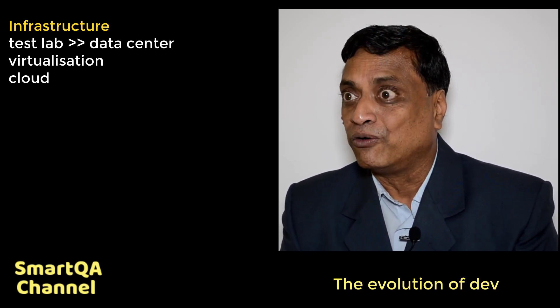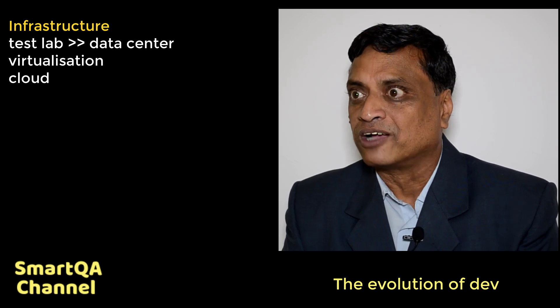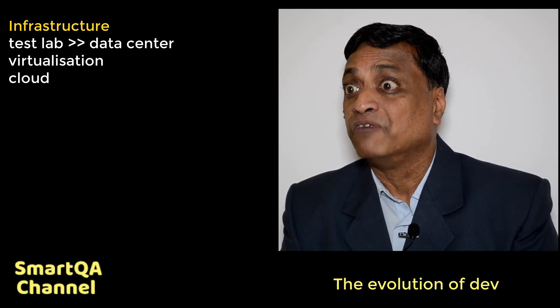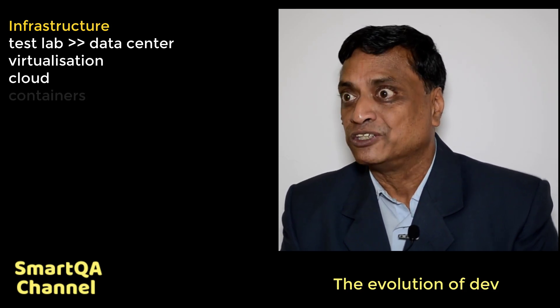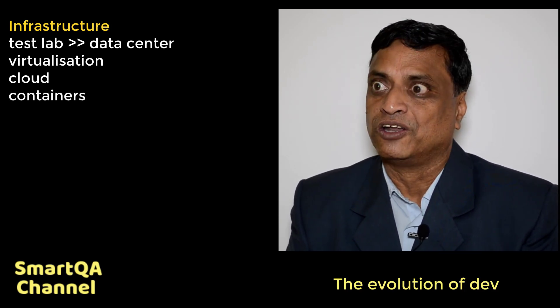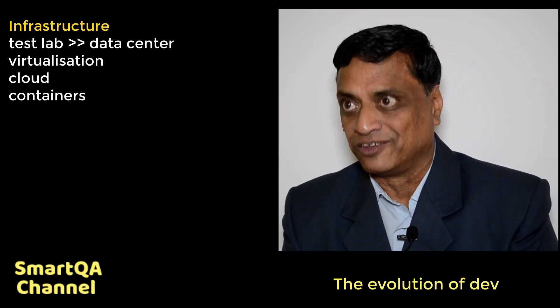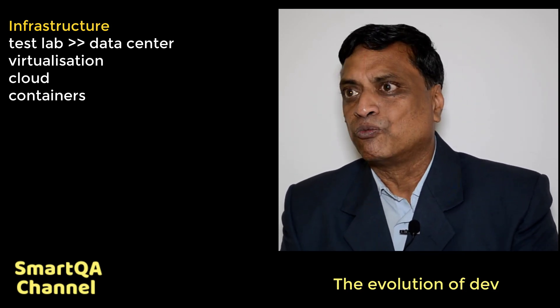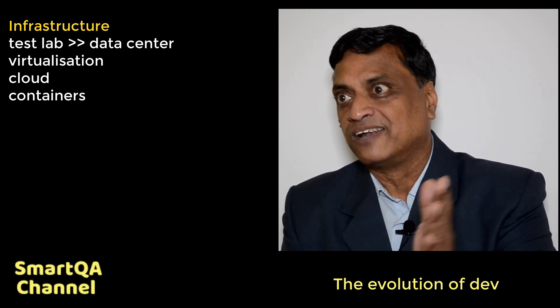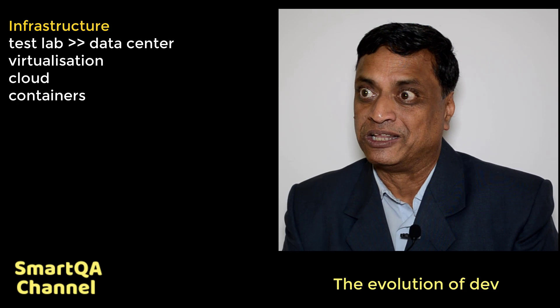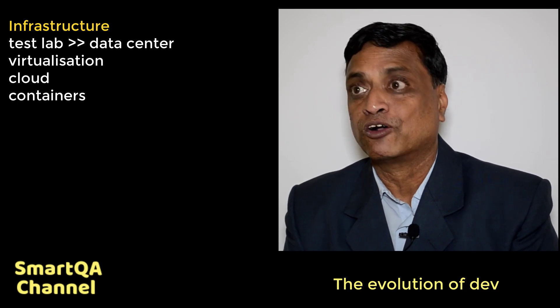And after cloud, people are actually talking about having virtual images within virtual images, which are called Docker, containers, and Kubernetes. That's one side of the dimension — dimension one — which was initiated by the test engineers.